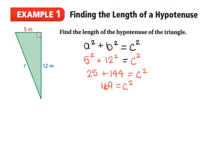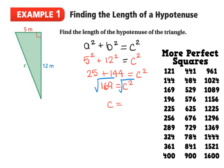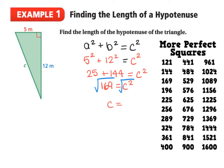Now we want to find C by taking the square root of both sides. So C is equal to the square root of 169. It's helpful to have a perfect squares chart — looking at it, 169 is 13 squared, so C is equal to 13. Because we're talking about a length, we take the positive value, so our hypotenuse is 13 meters.